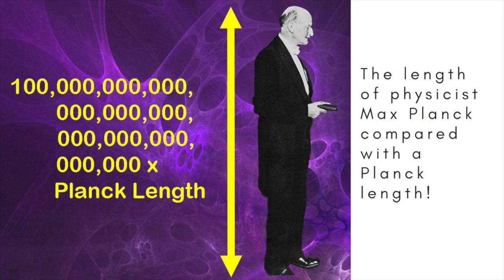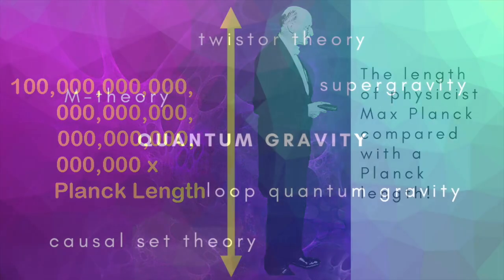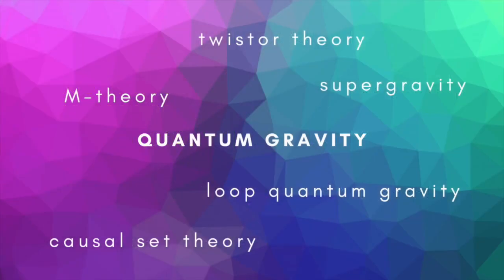In fact, quantum gravitational effects become significant only at distances less than what's known as the Planck length, about a hundred million trillion trillionth of a meter. Only when we get down to that incredibly tiny scale would quanta of the gravitational field, hypothetical particles known as gravitons, come out of hiding. Even though there's no way we can produce gravitons and carry out experiments with them in today's particle accelerators, theoreticians are busy at work trying to build a mathematical framework to describe quantum gravity.